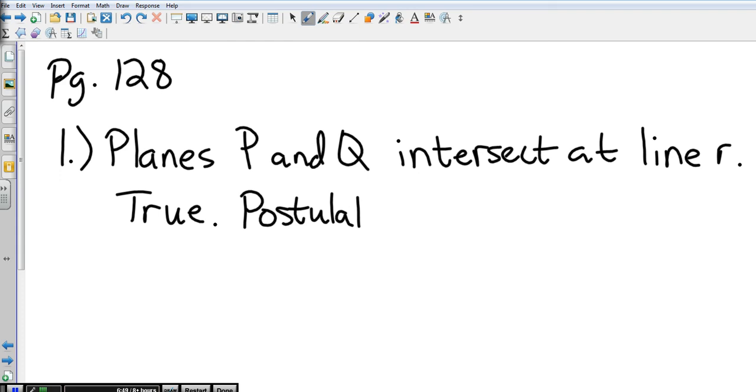Instead of writing out the entire postulate, you can just write postulate 2-7. So you don't have to write out what postulate 2-7 says again.